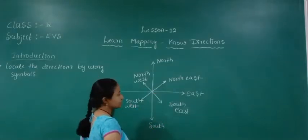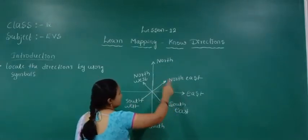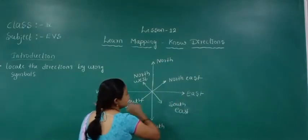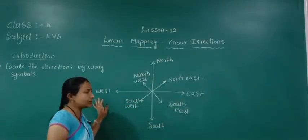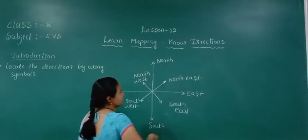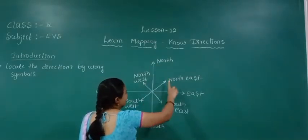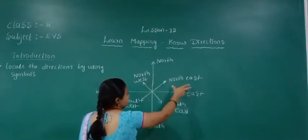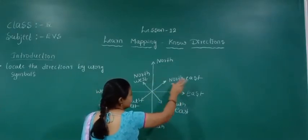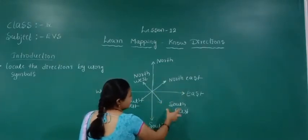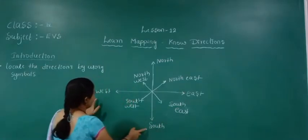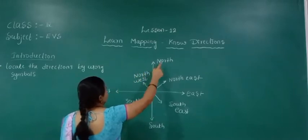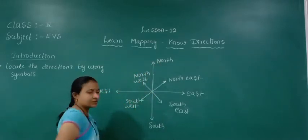First we will understand directions: north, south, west, east. In between north and east is north east. South and east is south east. South and west is south west. North and west is north west.